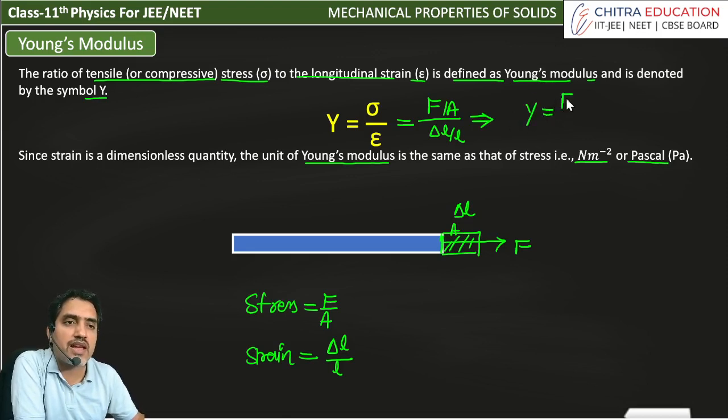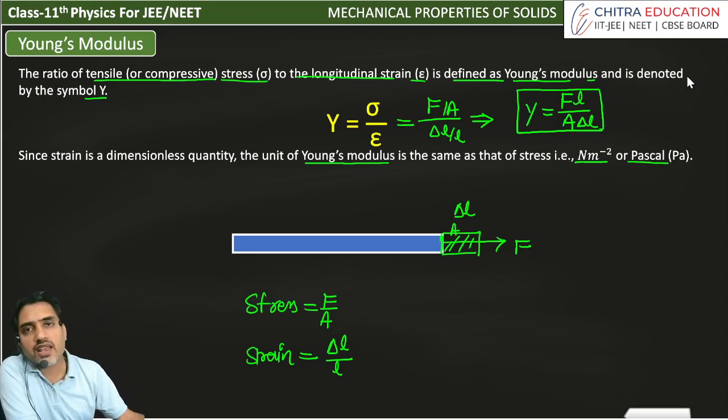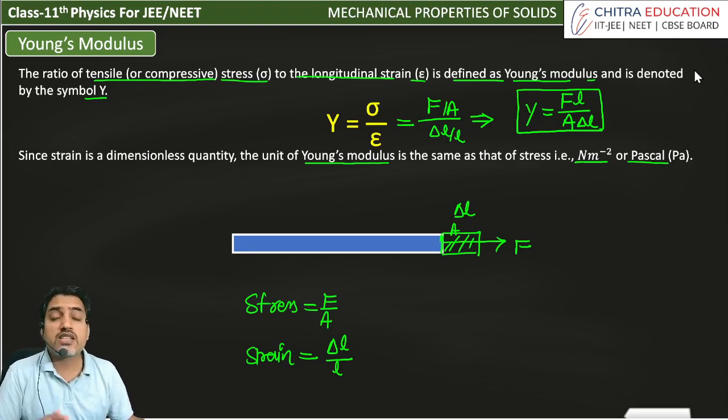then we have a formula: Y is equal to F into L divided by A into delta L. This formula is a very important formula which you have to use in numerical. I have to tell you that Young's modulus related problems in this chapter will be the most common questions in JEE, board, NEET, or any type of exam.